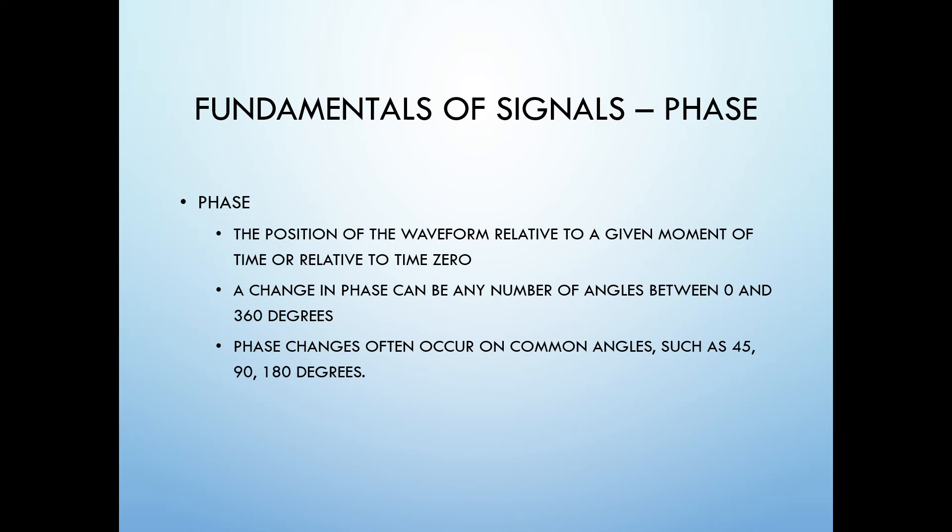Phase changes often occur on common angles, such as 45, 90, or 180 degrees. A phase change, or phase shift, involves jumping forward or backward in the waveform at a given moment of time.